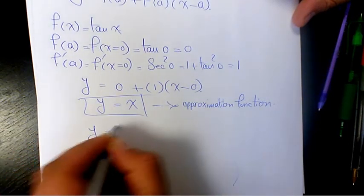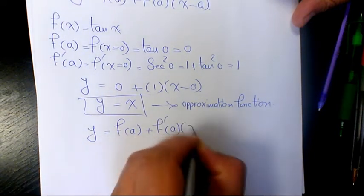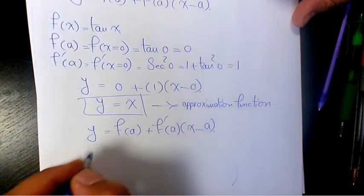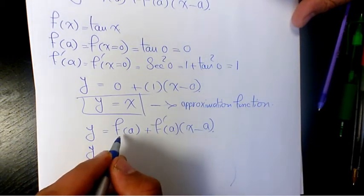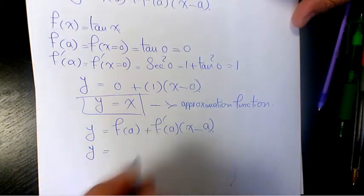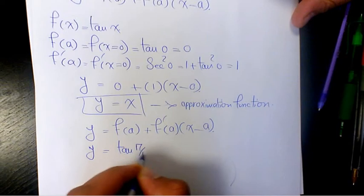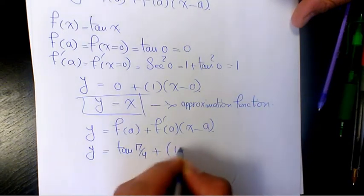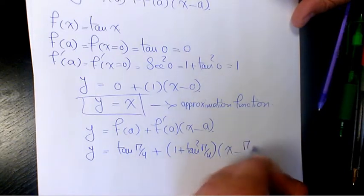y equals f of a plus f prime of a times x minus a. So that's going to be y equals f of a, which is tan π/4, plus 1 plus tan squared π/4, times x minus π/4.